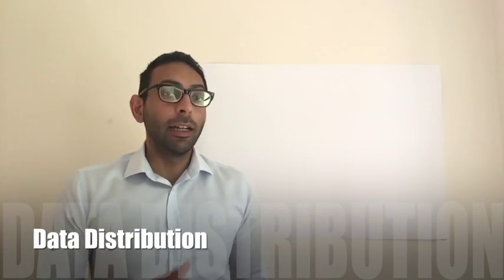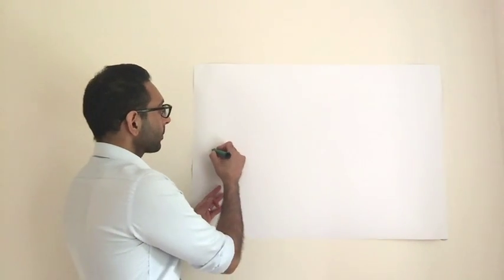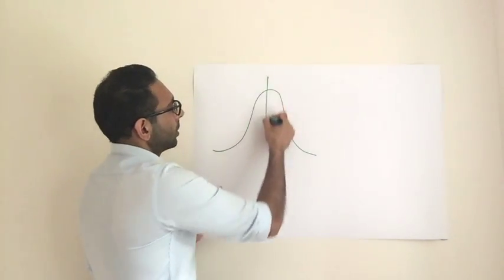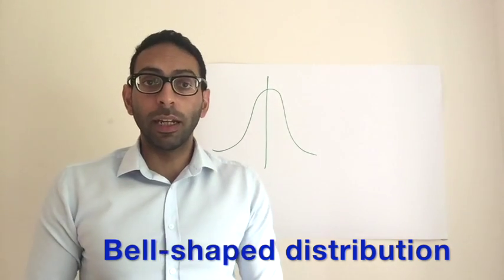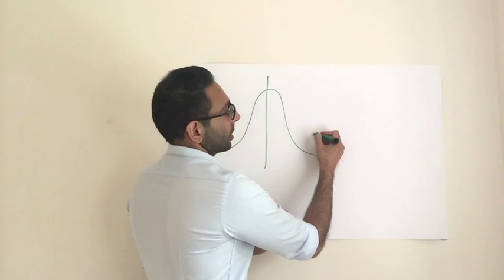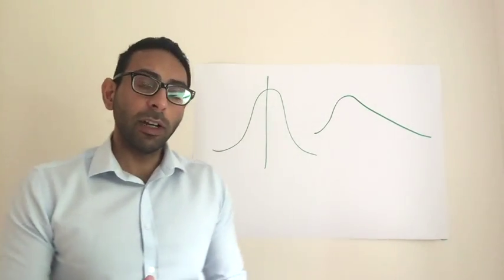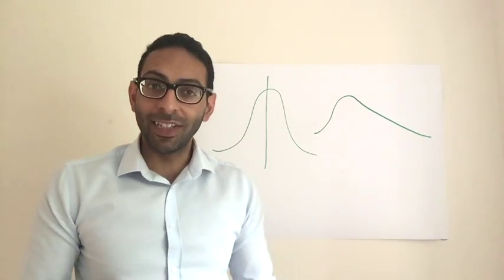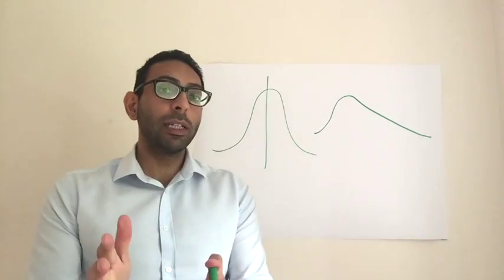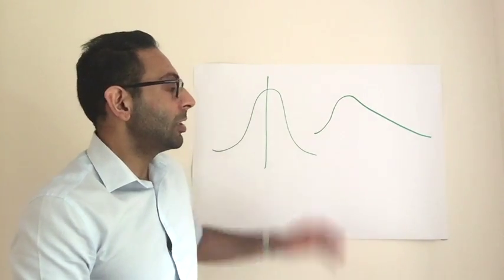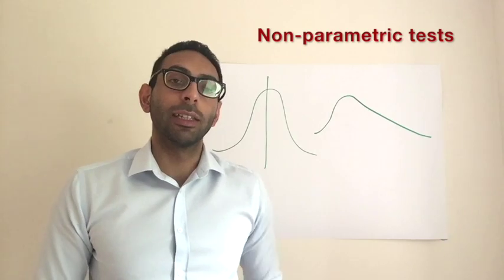The other thing that's quite useful to understand early on is looking at the spread of results and the shape of the distribution. You'll have probably seen the bell curve or normal distribution, where things are equally spaced on either side. But you can also get results that are not normally distributed or skewed. Understanding this early is important because it has implications on what statistical tests you can use. If results are normally distributed, you can use parametric tests; if not normally distributed, you have to use non-parametric tests.